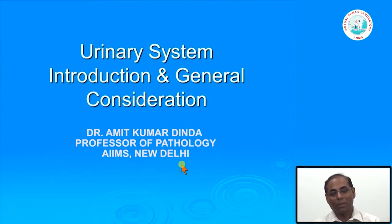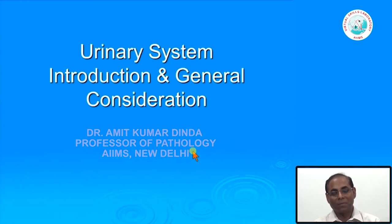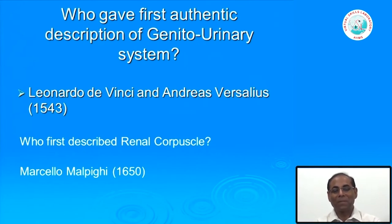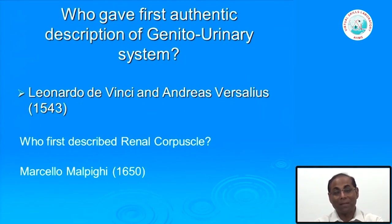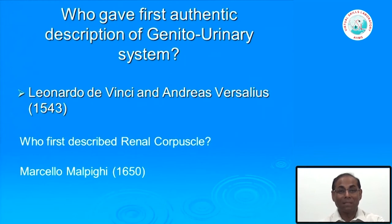Let us try to recapitulate some of our earlier knowledge from anatomy and physiology. To understand the historical perspective of renal diseases: the first authentic description of the genitorenal system was given by Leonardo da Vinci and Andreas Vesalius in 1543. The renal corpuscle was described by Marcello Malpighi, a physician, which is why these were earlier called Malpighian corpuscles.